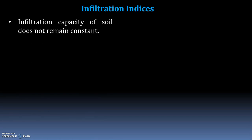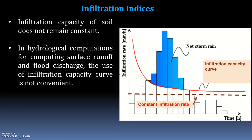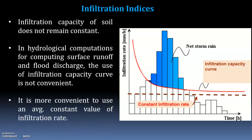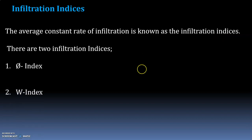Infiltration capacity of soil does not remain constant. In hydrological computations for surface runoff and flood discharge, using the infiltration capacity curve is not convenient. It is more convenient to use an average constant value of infiltration rate. This average constant rate is known as the infiltration index. There are two types: the phi index and the W index.